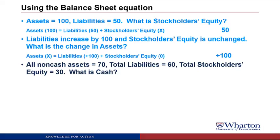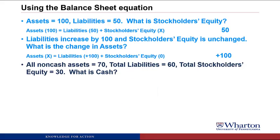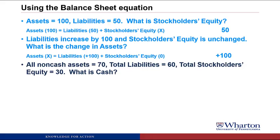Next: all non-cash assets are 70, total liabilities are 60, total stockholders' equity is 30 — what is cash? We use the balance sheet equation separating assets into cash and non-cash. Liabilities of 60 plus stockholders' equity of 30 gives 90 on the right-hand side. Non-cash assets are 70, so the only thing missing is cash, which has to equal 20 so that we have 90 on each side.